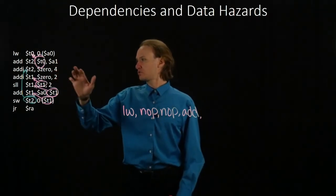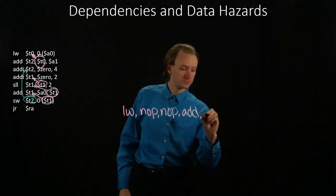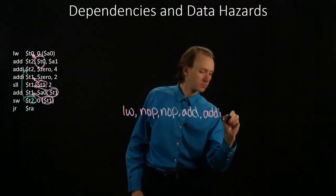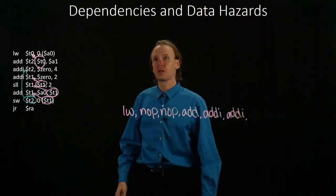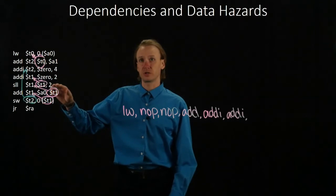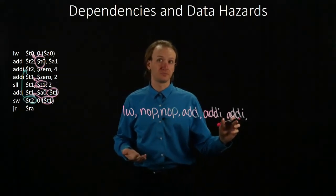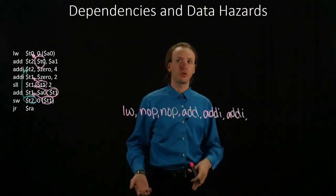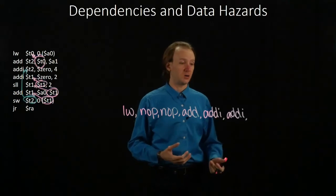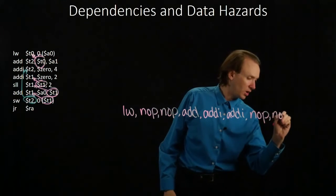Our third instruction and our fourth instruction aren't dependent on any others, so we'll be able to run those immediately. Now we've got our shift-left logical instruction. That is dependent on the previous add immediate instruction, so we're going to need to wait two cycles for the add immediate instruction to complete before we can get the results for T1 out. So we'll fill those two cycles with no-op instructions.